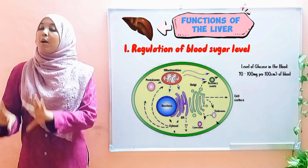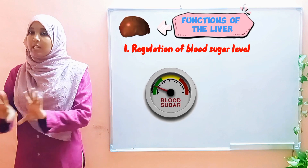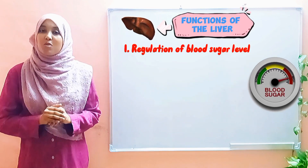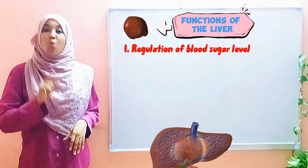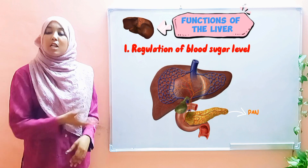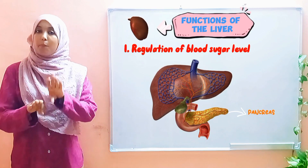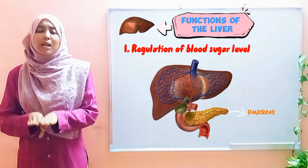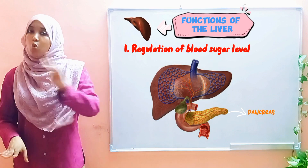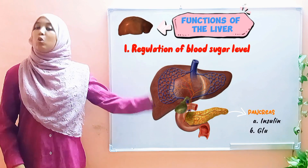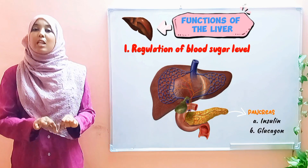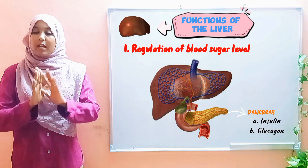Essentially, glucose needs to be present in our blood, but the amount has to be maintained within a certain range — no more or no less than a particular amount. The liver does so with the help of another organ, the pancreas. The pancreas plays a huge role because it secretes two hormones: insulin and glucagon, which are essential in controlling the amount of blood sugar.